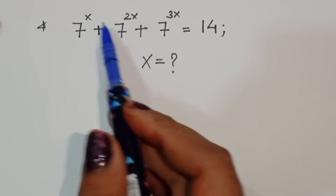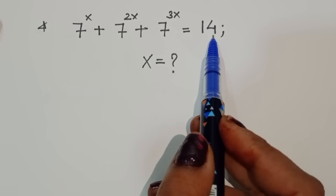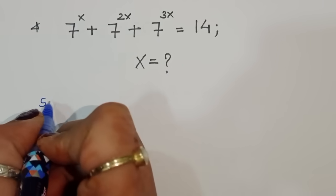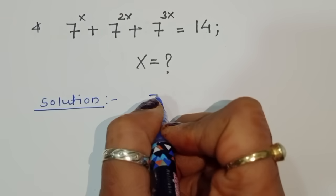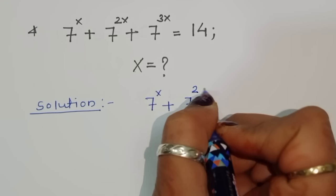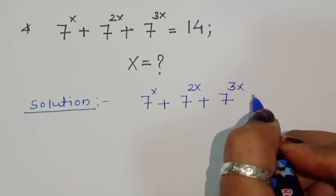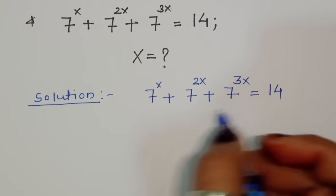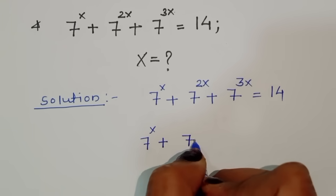The question is: given 7^x + 7^2x + 7^3x = 14, we have to find out the value of x. Let's see the solution. 7^x + 7^2x + 7^3x is equal to 14 — this is the given question.